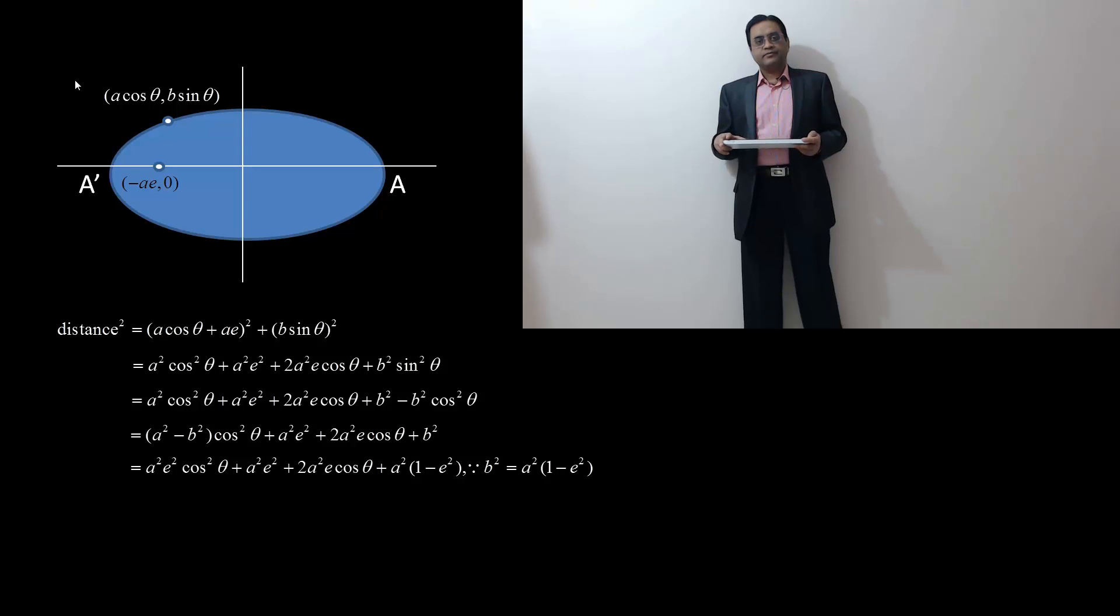we get distance² = (a cos θ + ae)². That means distance = a(1 + e cos θ).